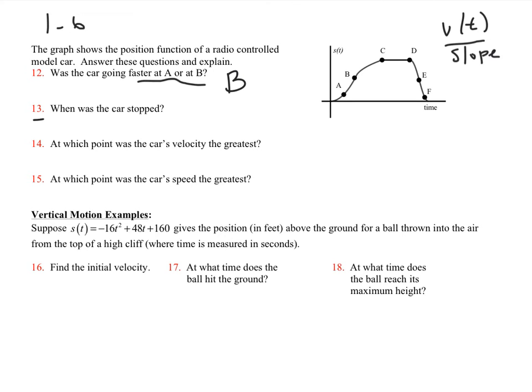Car stopped means that the slope is zero. Well, if I go like this, my slope right here is zero between C and D. So I'm going to be stopped on the interval, could be closed or it could be open, from C to D. And then 14, at which point was the car's velocity the greatest?